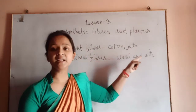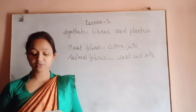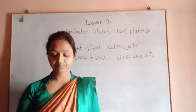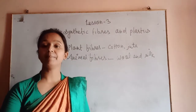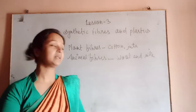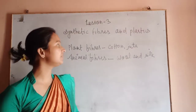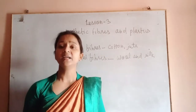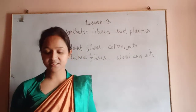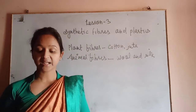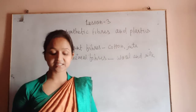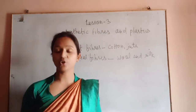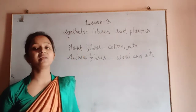All natural fibers are used for making fabrics — whether cotton, whether jute, whether wool and silk, they are all used for making fabrics. And collectively we can say that cotton, jute, wool, and silk are called the natural fibers.